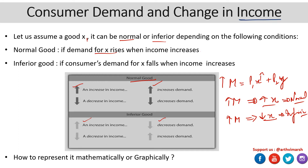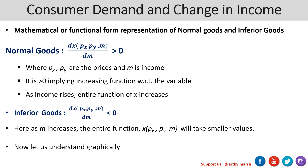Now, how to represent this mathematically or graphically? In our previous expression, we wrote the demand function for x as a function of: price of x, price of y, and income. For normal goods, if the demand function for x is a function of price of x, price of y, and income, the key condition is that the change in demand for x with respect to change in income is going to be positive.